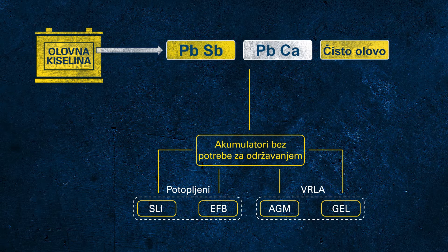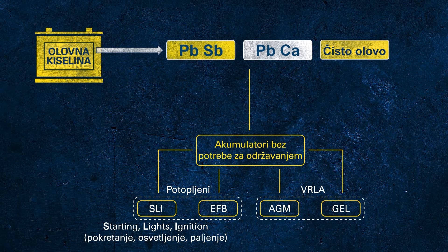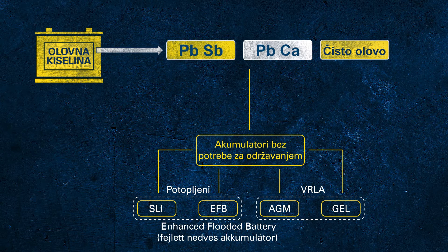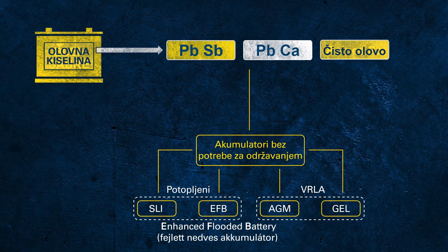Let's shed some light on the abbreviations used here. SLI stands for starting, lights, and ignition, which describes the main duties of a conventional starter battery in a conventional vehicle. EFB stands for enhanced flooded battery — this is not a protected term, so any change applied to an SLI might be called an EFB. Usually EFB indicates a flooded battery with improved cycling capabilities, but as it is still a flooded battery, it is not as robust as VRLA technology.